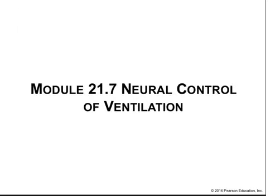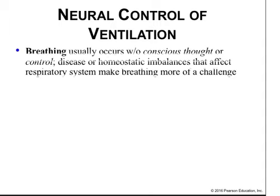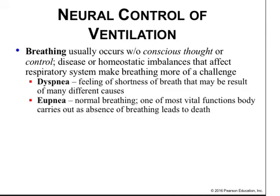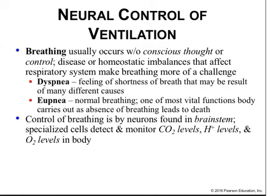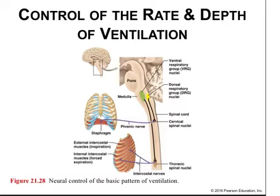How is ventilation controlled by the nervous system? Breathing usually occurs without conscious thought or control. Disease or homeostatic imbalance affects the respiratory system and makes breathing more of a challenge. Dyspnea is the feeling of shortness of breath that can result from many different causes, while eupnea is normal breathing — one of the most vital functions the body carries out. The control of breathing by neurons is found in the brain stem. Specialized cells detect and monitor carbon dioxide levels, proton levels, and oxygen levels in the body. Negative feedback loops and stretch receptors in the lungs also ensure oxygen intake and carbon dioxide elimination match metabolic requirements.